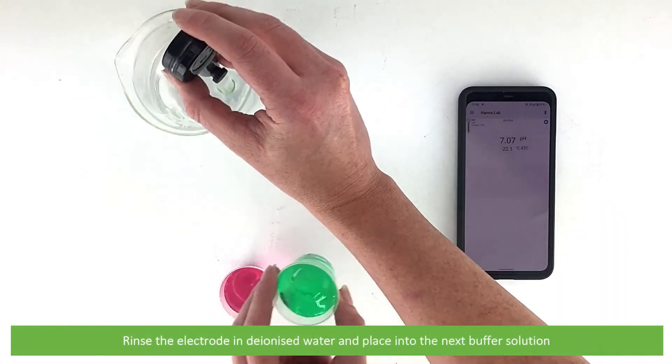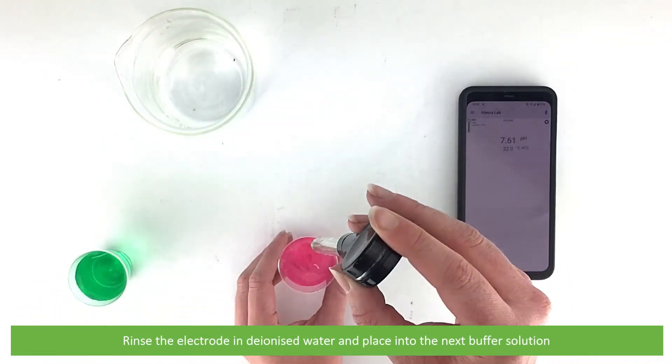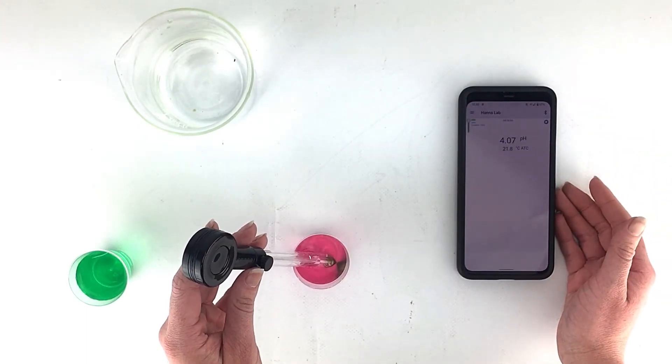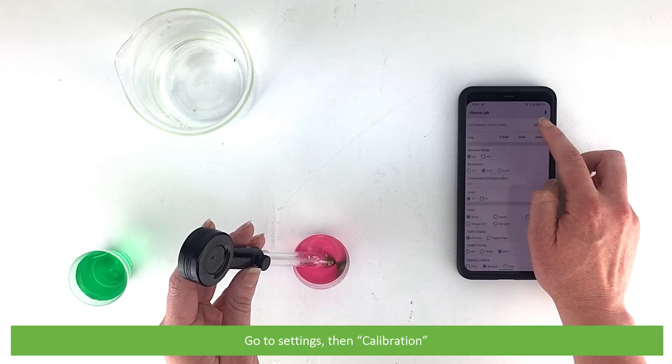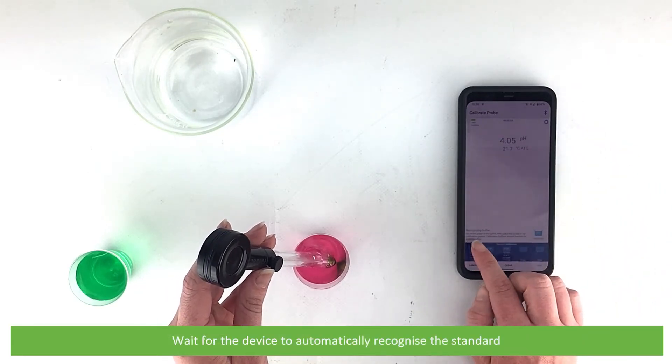Rinse the electrode in deionized water and place it into the next buffer solution. Then go to settings, then calibration. Wait for the device to automatically recognize the standard.